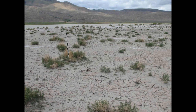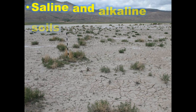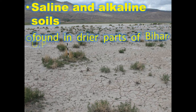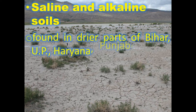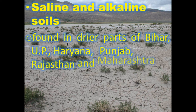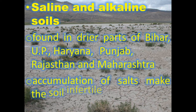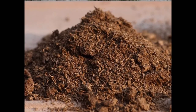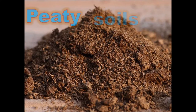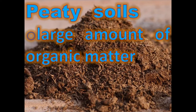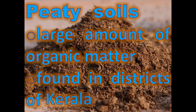Saline and alkaline soils are found in drier parts of Bihar, Uttar Pradesh, Haryana, Punjab, Rajasthan, and Maharashtra, formed by accumulation of salts which make the soil infertile. Peaty soils contain large amounts of organic matter and are mainly found in districts of Kerala.